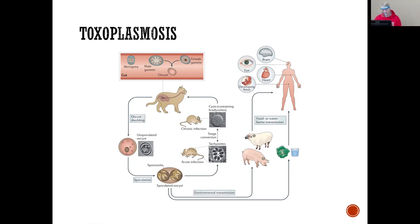How does the cat play into this? The cat is shedding oocysts — unsporulated, kind of like a seed. Then they sporulate, and that tachyzoite can infect a mouse. The mouse becomes a chronic infection, and then the cat eats the mouse — that's how the cat got it. It's a circular life cycle: infected, shedding, reinfecting, eating, shedding, reinfecting.